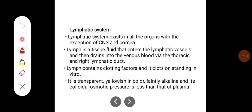Lymphatic system exists in all organs with exception of the brain. Lymph is a tissue fluid that enters lymphatic vessels and then drains into the venous blood via thoracic duct and right lymphatic duct.